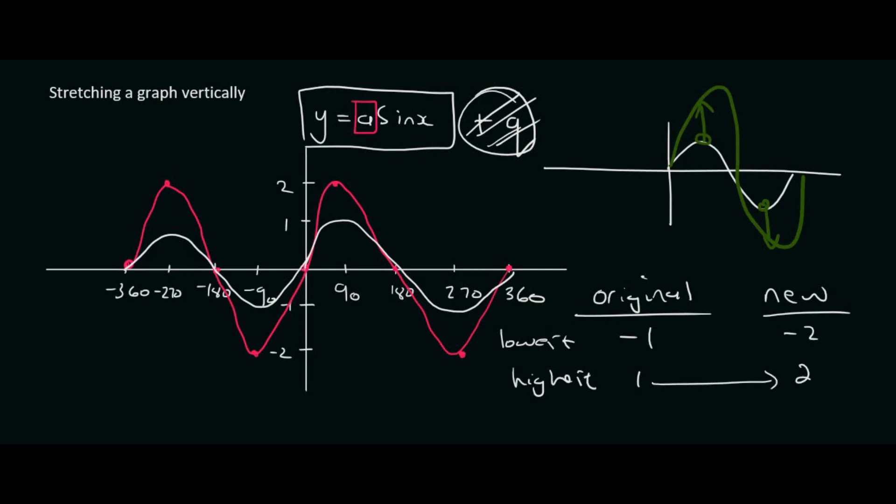So how do you get from there to there? You could say that you should plus 1, but then if you plus 1 to this 1, it doesn't get you to the same place. How else could you get from 1 to 2? You can multiply by 2.